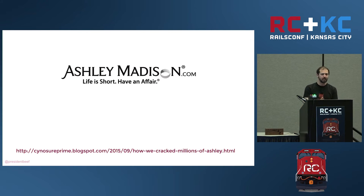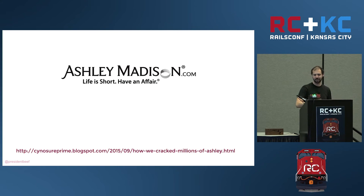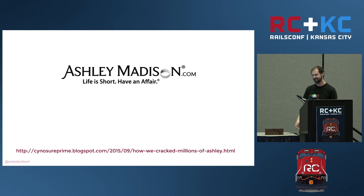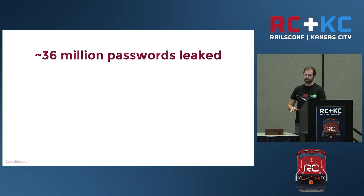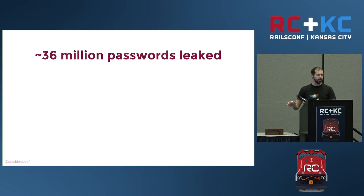Ashley Madison — their tagline is "life is short, have an affair," which is a bit of a logical fallacy. They had a whole bunch of information stolen. I'm not talking about how it was stolen, but part of what was stolen were database dumps and source code — and not just source code, but git repos, which is very interesting.